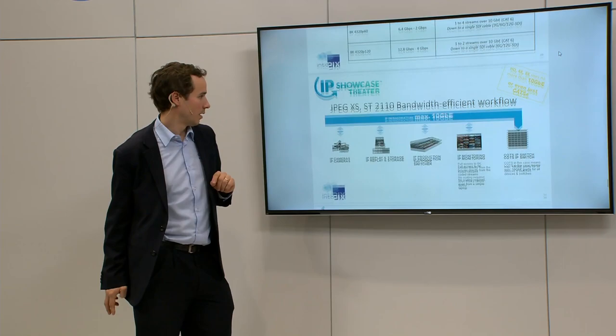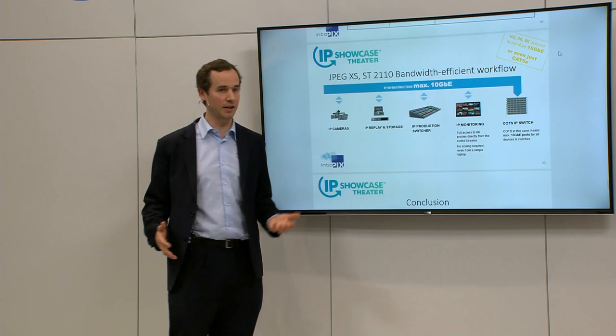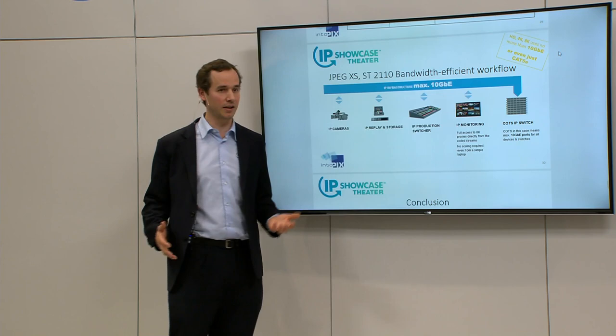What this means is that everything goes on a 10 gig pipe. For monitoring, you can take the benefits of scalability — extract HD, 4K, or 8K from the codestream — using a simple 10 gig port and simple 10 gig switch, and go easily over IP with your production workflow.